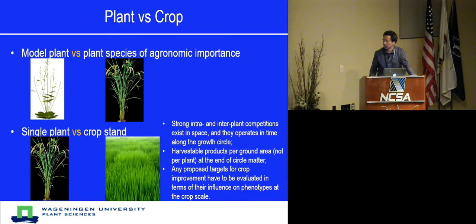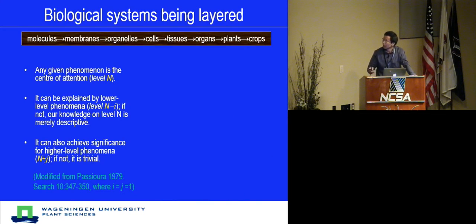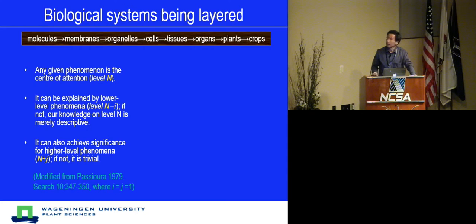Because of this, we believe that any proposed target for crop improvement — for genetic improvement or plant breeding activity — has to be evaluated in terms of its influence on the phenotype at the crop level. This is a fundamental idea in the crop modeling community. We are talking about planting in silicon. Plant crops are almost at the terminal steps of this so-called layered biological system chain.